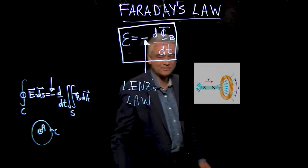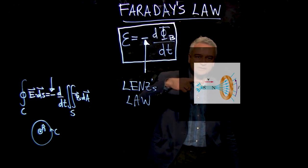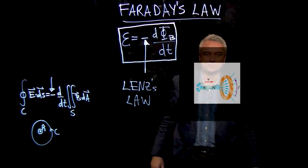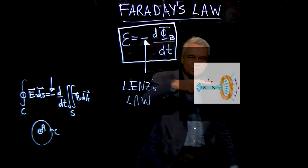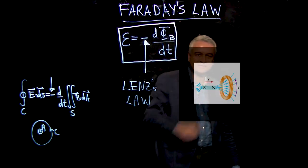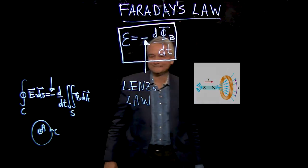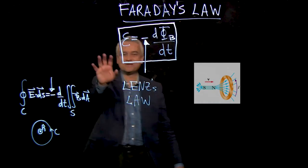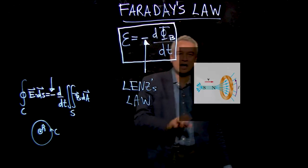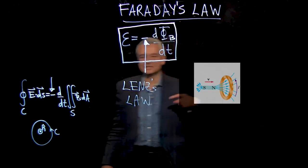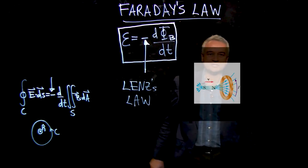Let's use the example we've used before of a magnet, which I'm moving into a loop of wire. So I have this bar magnet, I'm moving it into the loop of wire — that's increasing the flux through that loop. And if I apply Faraday's law with this minus sign, I conclude that I induce an EMF in that loop, which drives the current in the direction shown.